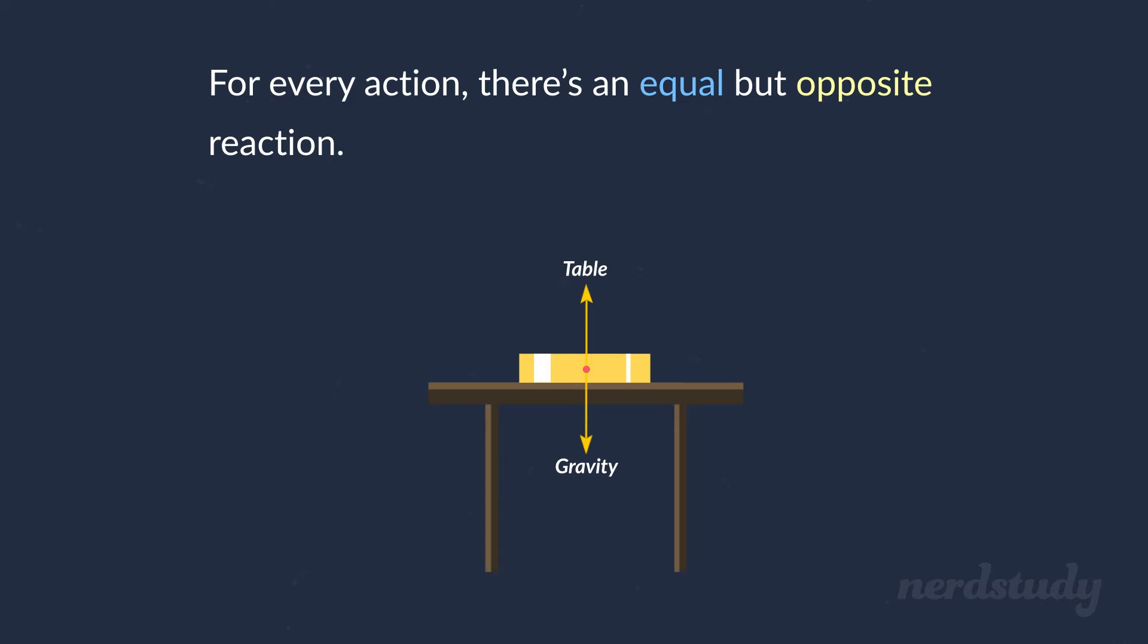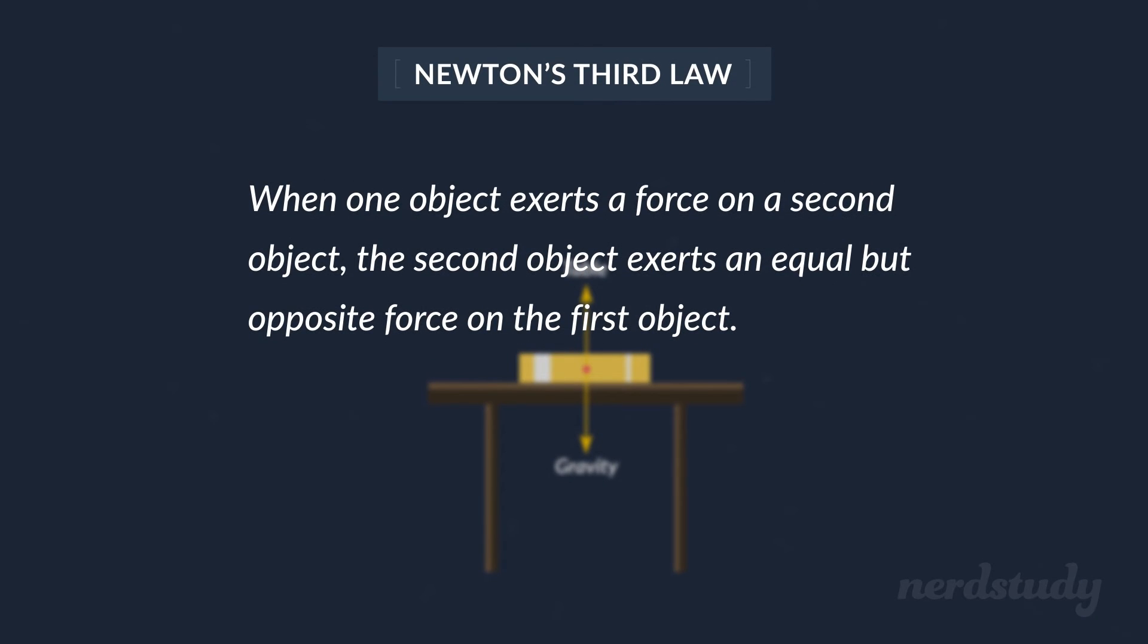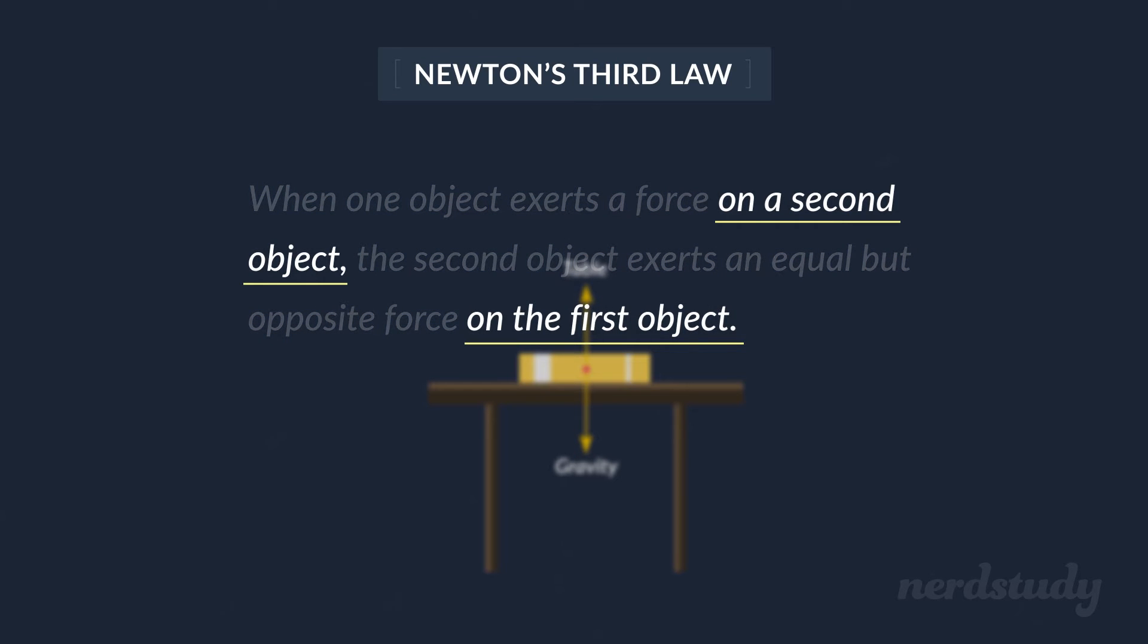What does Newton's Third Law really say? It says that when one object exerts a force on a second object, the second object exerts an equal but opposite force on the first object. Once we look at this full statement of the third law, we notice that the two forces mentioned in the law actually act on two different objects.